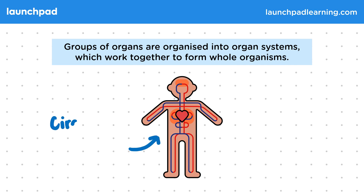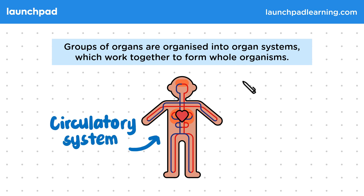In this simple diagram you can see the circulatory system. In this example the heart works with the blood vessels to continue to provide all parts of the body with blood and the nutrients that it needs for respiration.